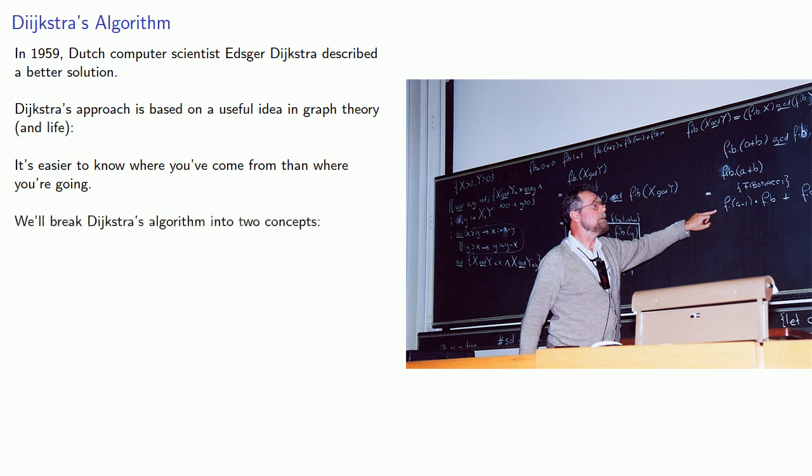We'll break Dijkstra's algorithm into two concepts: first, recording the distance of the shortest path from a node to the destination and tracking the nodes we've checked.